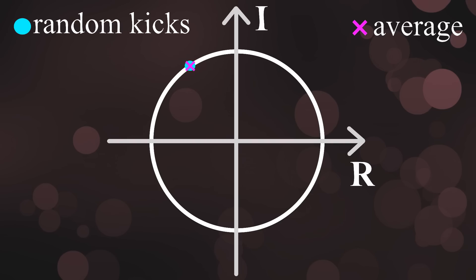If you randomly select points on this circle and average over them, then the average will not lie on the circle. Instead, it will converge to the middle of the circle, which is at zero. So if you average over all the random kicks, you get zero.